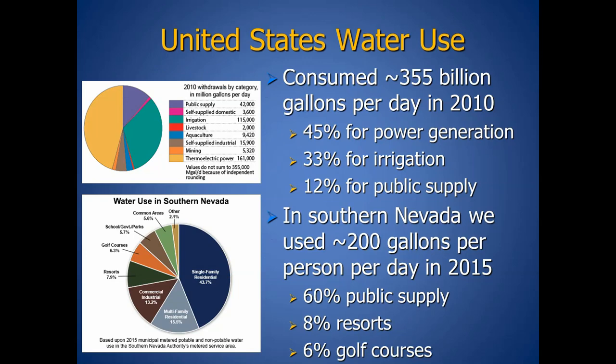The eastern half of the U.S. gets most of its water from aquifers and groundwater. West of the Rockies, we don't have those aquifer resources, so we get a lot of ours from surface water.